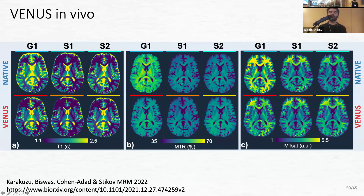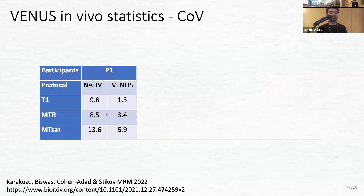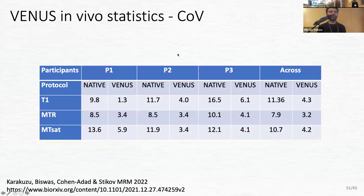We calculated the coefficient of variance. T1, magnetization transfer, and MTsat — three different quantitative MRI parameters — showed big variability in the native implementations but not so much in the vendor-neutral implementation. This holds across subjects and within individual subjects, and we reduce the variability by about 60–70%.